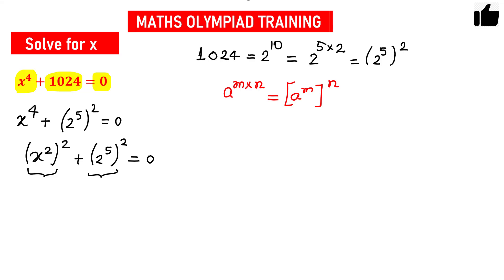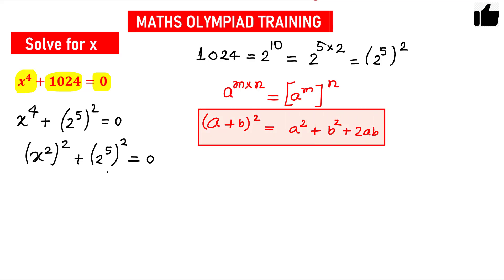Now this is written in the form a² plus b², so some terms are missing — specifically 2ab. If you remember the formula, (a + b)² equals a² plus b² plus 2ab. So we can add 2ab and subtract 2ab. We have (x²)² plus (2⁵)² plus 2 times a times b, where a is x² and b is 2⁵.